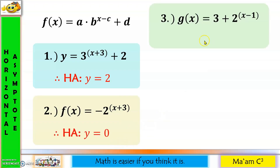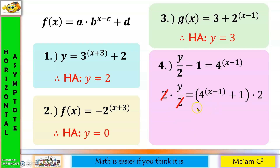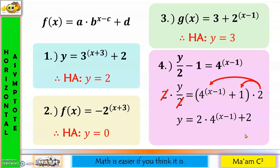Another example: this is a little tricky — d is written in front, so the horizontal asymptote is y equals 3. For the last example: move negative 1 to the other side, then multiply both sides by 2 to eliminate the coefficient. Distribute 2: two times four raised to x minus one, plus two times one equals plus two. So d is 2, and therefore the horizontal asymptote is y equals 2.